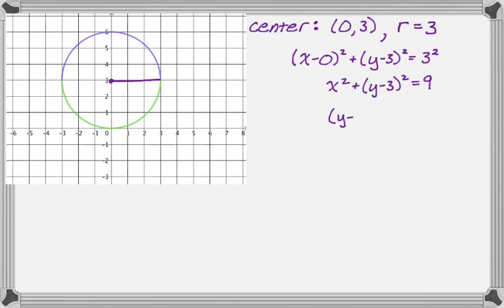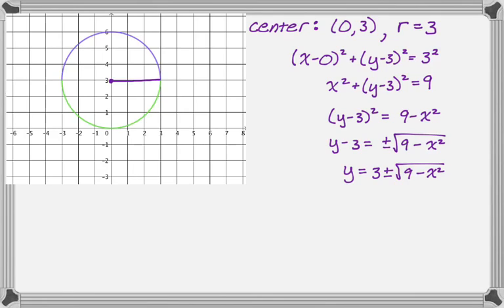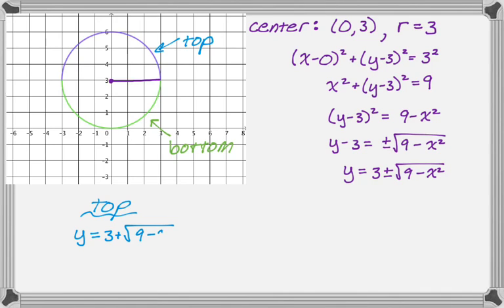Subtract x squared from both sides: the quantity y minus three squared equals nine minus x squared. Take the square root — don't forget the plus or minus, that's where most mistakes come in. We get y minus three equals plus or minus the square root of nine minus x squared. Adding three to both sides: y equals three plus or minus square root of nine minus x squared. Write the three in front of the radical so it's not ambiguous. The top half is y equals three plus radical nine minus x squared, and the bottom half is y equals three minus radical nine minus x squared.